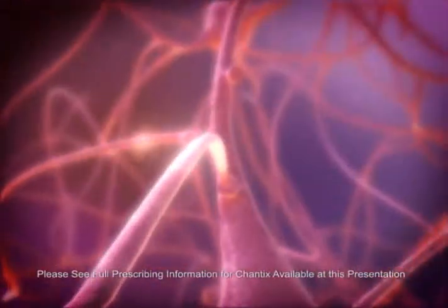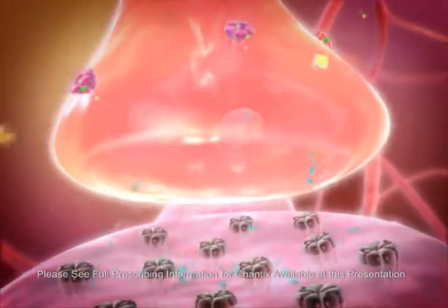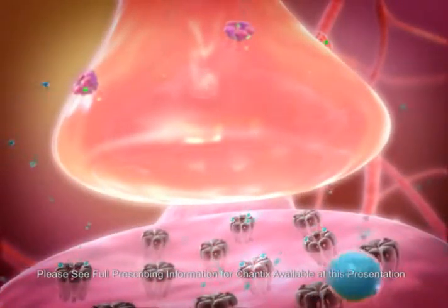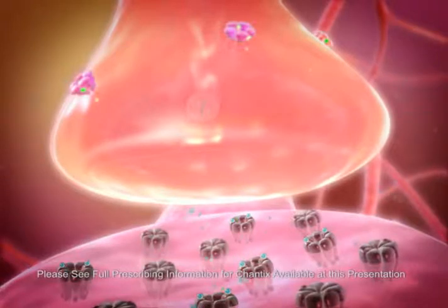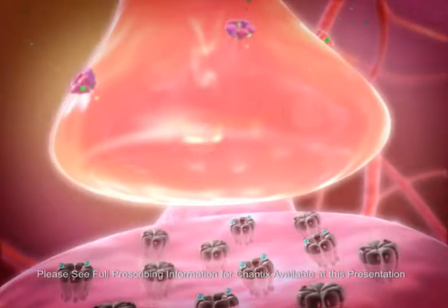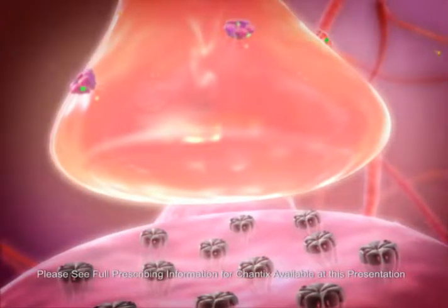Although varenicline is believed to also affect the same alpha-4-beta-2 nicotinic receptors that nicotine activates, the stimulation of neurons by varenicline in this area of the mesolimbic dopamine system results in a lower dopamine release than that caused by nicotine at the synaptic cleft in the nucleus accumbens. Again, varenicline acts by partially stimulating the alpha-4-beta-2 receptors in addition to preventing nicotine from binding.